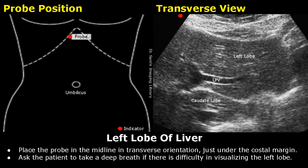This white box is the ultrasound probe. The red dot is the indicator or the orientation marker. It is facing towards the right side of the patient. These dotted lines represent the right and left costal margins. This is the umbilicus. The patient is in a supine position.